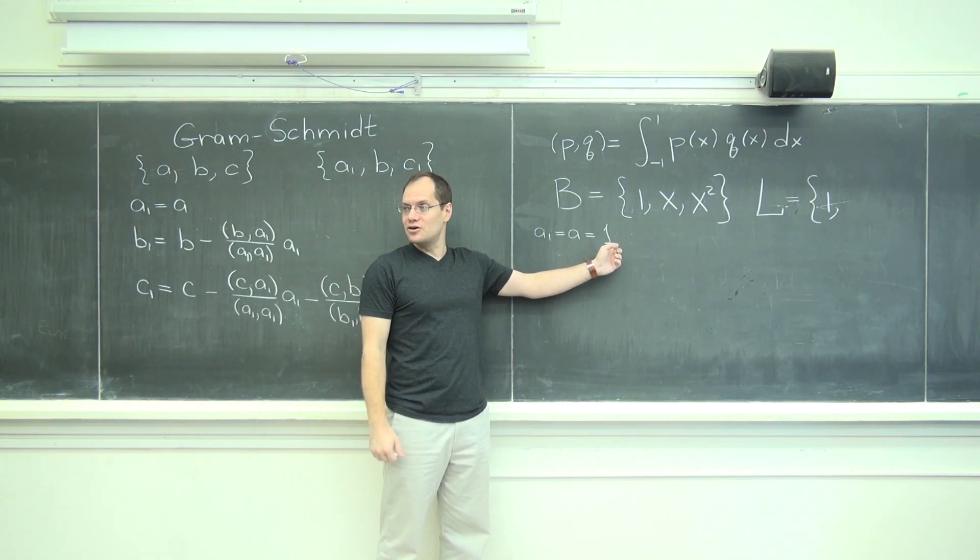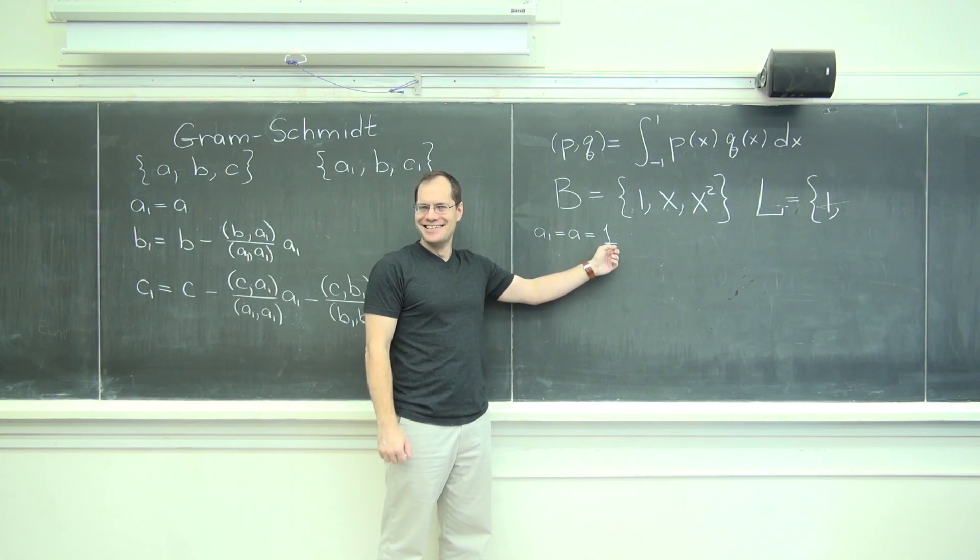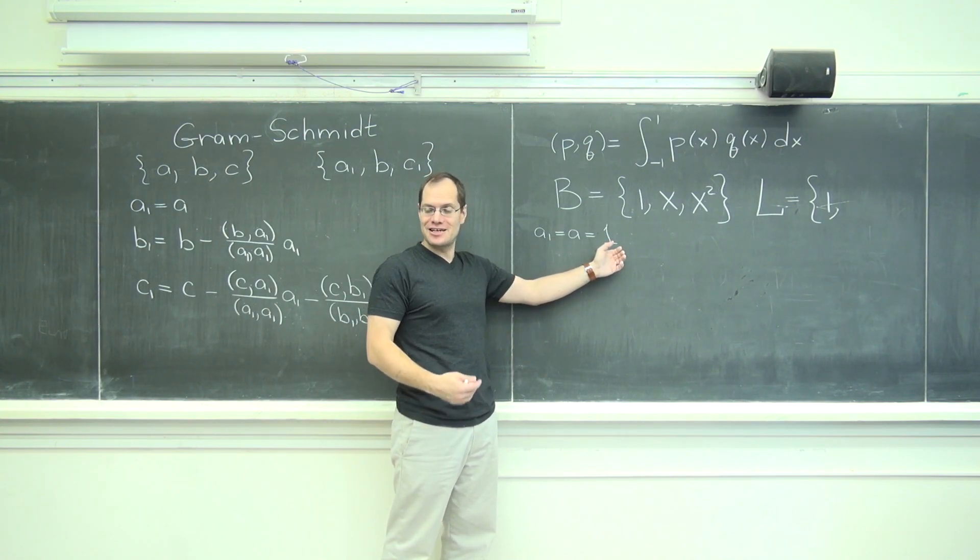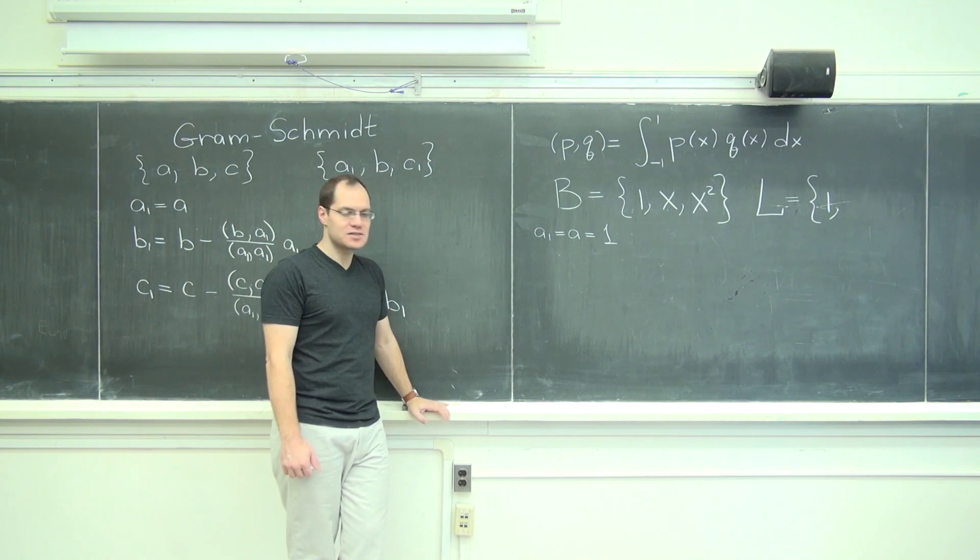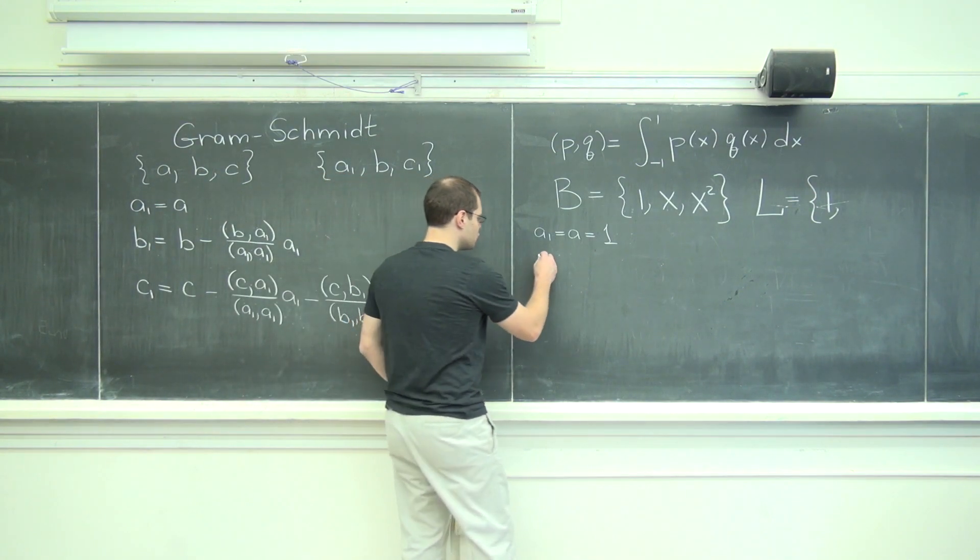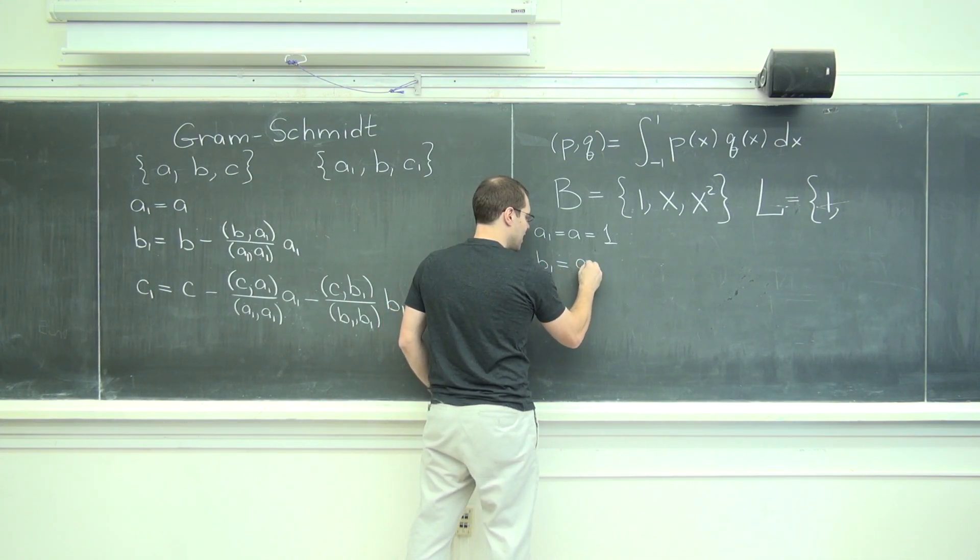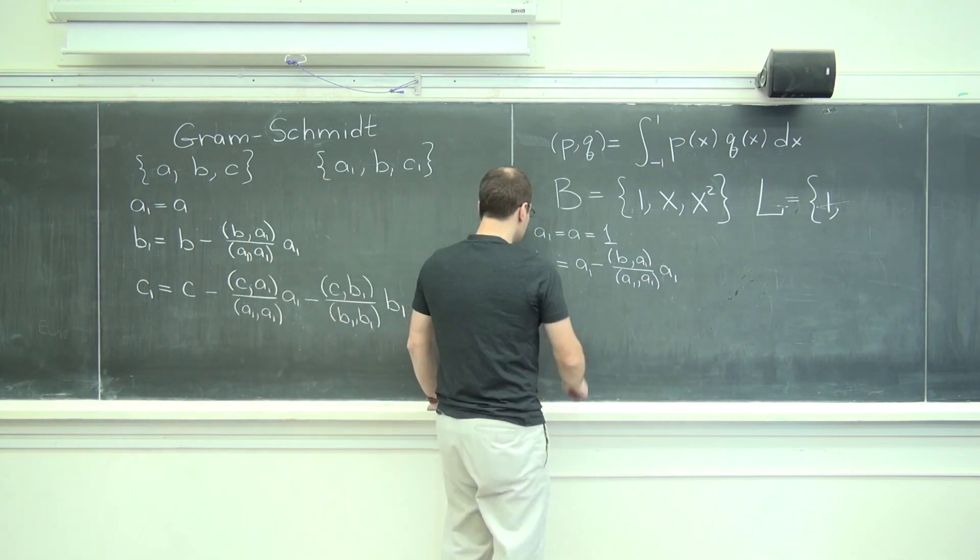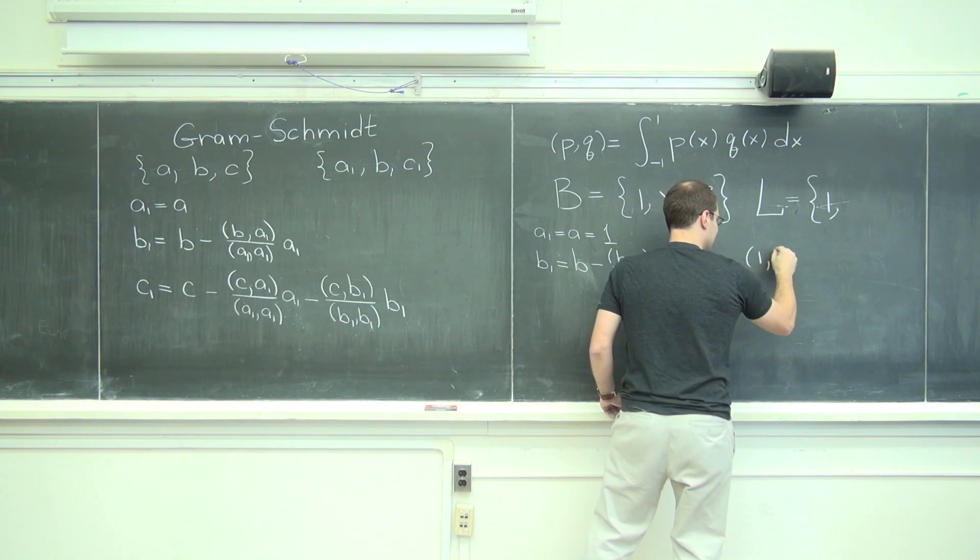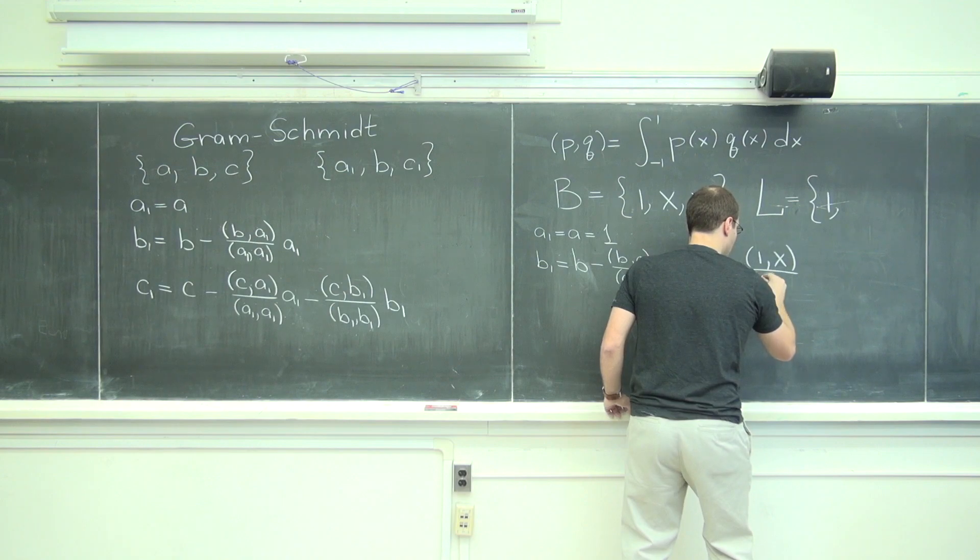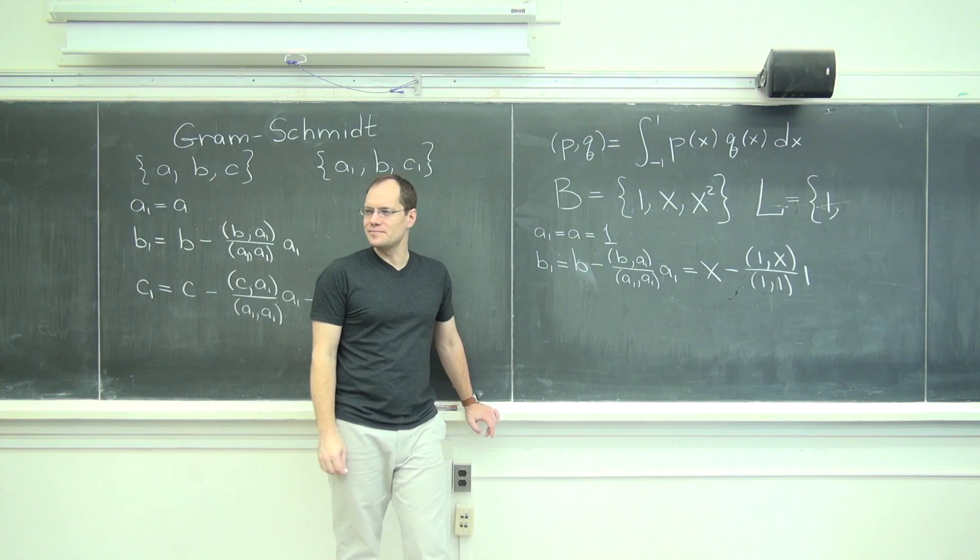1 the number or 1 the polynomial? I'm however many years old. And whenever I see a number, I always tell myself, is it 1 the number or 1 the vector? That habit never stops. Yes. 1 the polynomial. B1 equals, it equals x minus 1 dotted with x divided by 1 dotted with 1. That's pretty confusing because there's so many 1s.